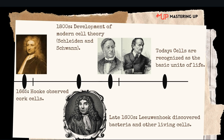Micrographia was one of the first scientific best-sellers. People marveled at the intricate details of Hooke's drawings, from the cells in the cork to the structure of a flea's body. The book helped popularize microscopy and encouraged other scientists to use microscopes in their research. Today Hooke is remembered as one of the pioneers of cell biology. His discovery of cells laid the groundwork for the development of cell theory, which states that all living things are made up of cells, cells are the basic units of life, and all cells come from pre-existing cells. These principles are fundamental to biology and medicine.